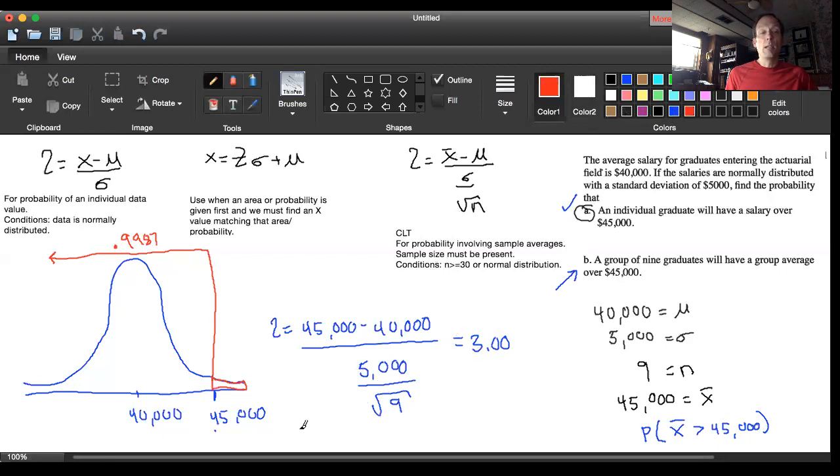My final answer would have to be, just like we saw in part A, 1 minus 0.9987. That comes down to 0.0013, and this is our final answer. Thanks for watching.